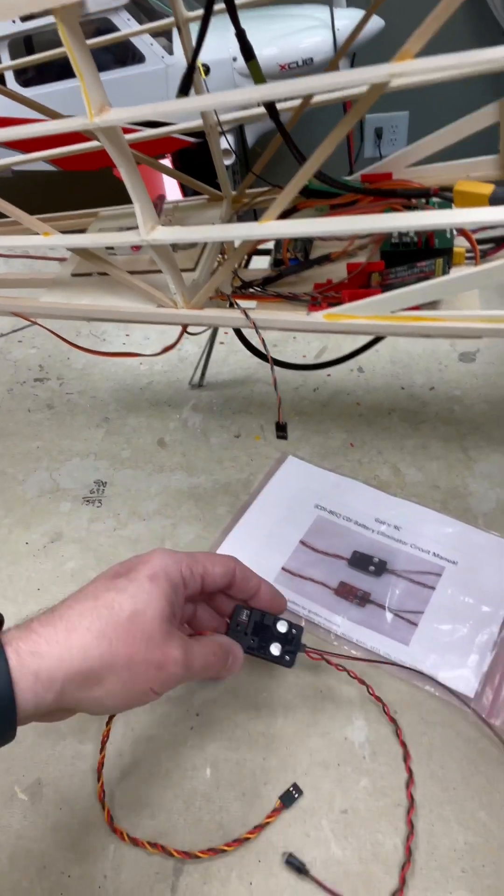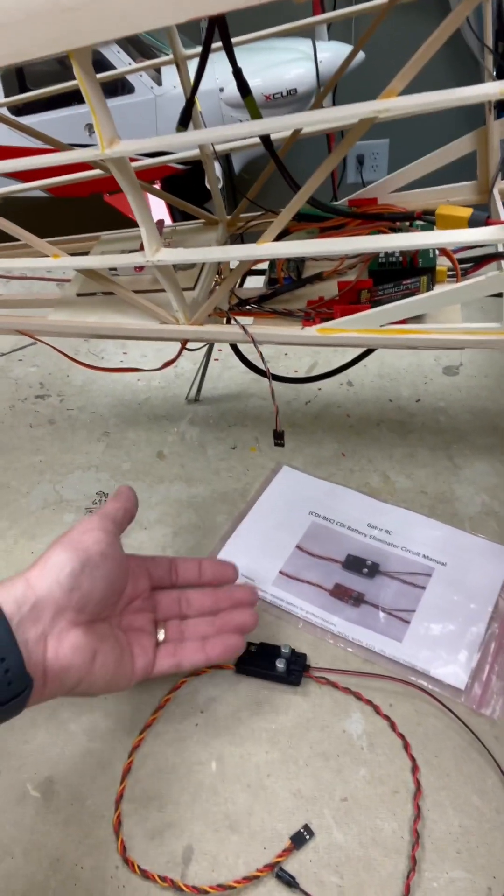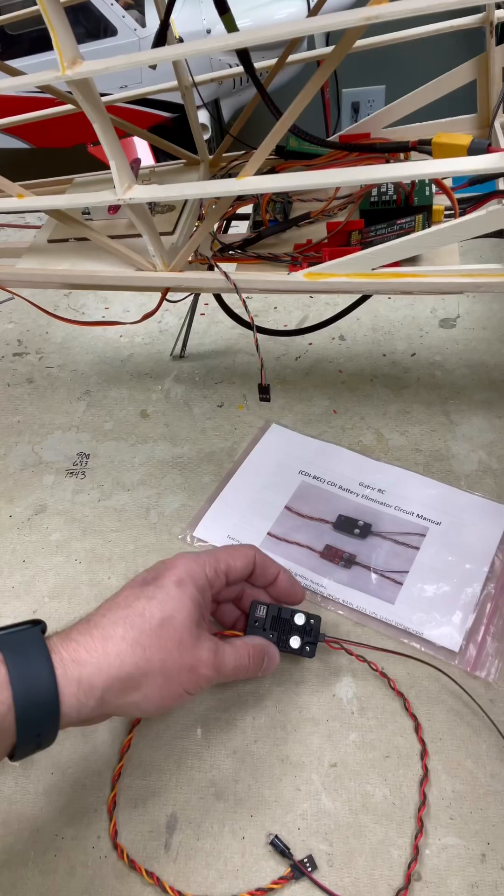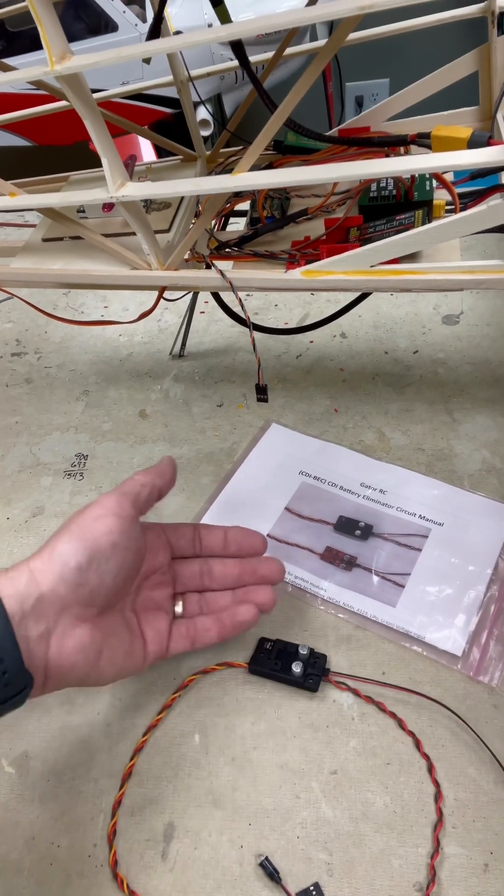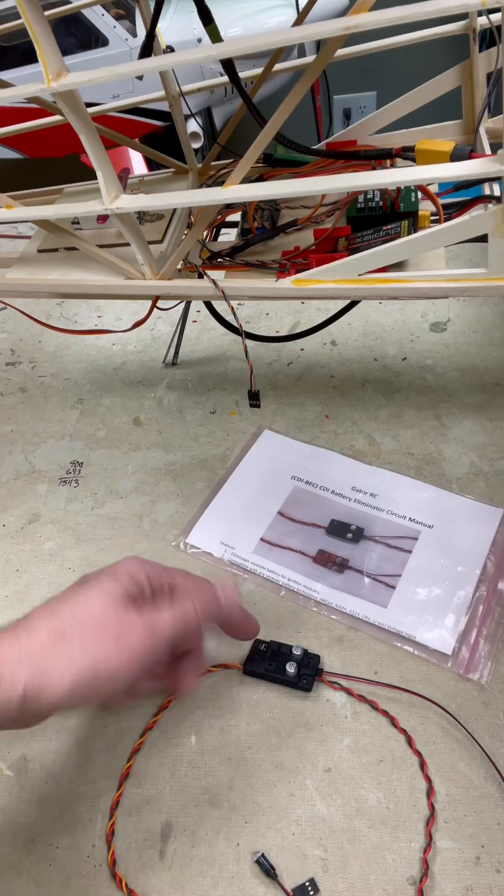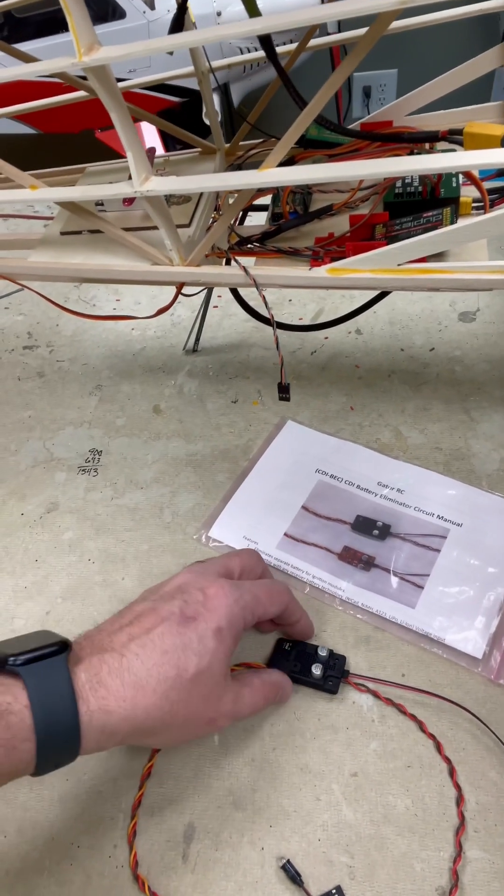Dip switches. This thing controls power out to the ignition module of your engine. You can use the dip switch and set it to output anywhere from 5 to 8 volts, and it has filtered capacitors.